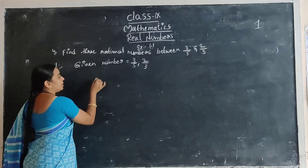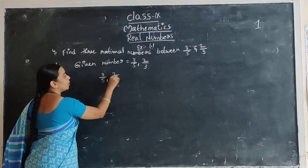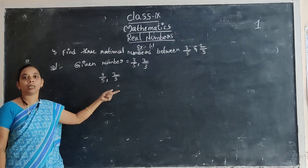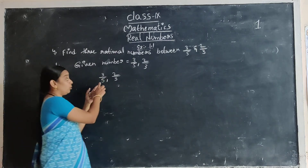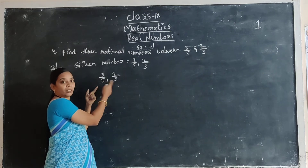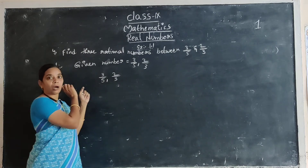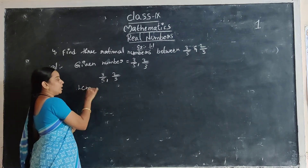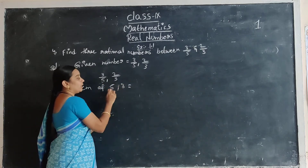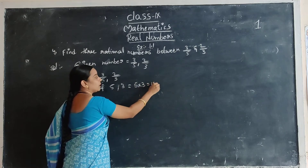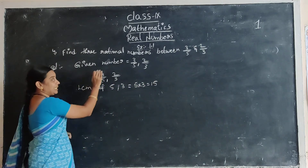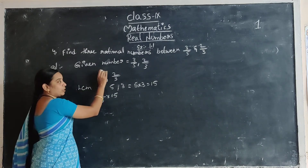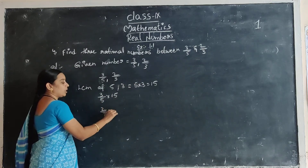Given numbers are 3 by 5 and 2 by 3. Observe the denominators. If denominators are same only, then multiply with 10 by 10. But here two different denominators are there. So first of all remove the denominators. How? First find LCM of the denominators. LCM of 5 and 3. 5 and 3 are different numbers, so multiply: LCM is 15. That means each fraction is multiplied with that LCM. First fraction multiplied with 15, and second fraction also multiplied with 15.